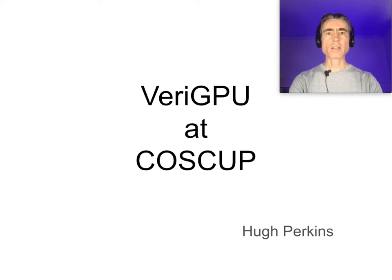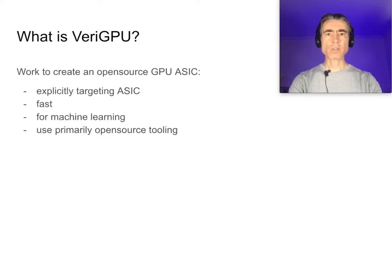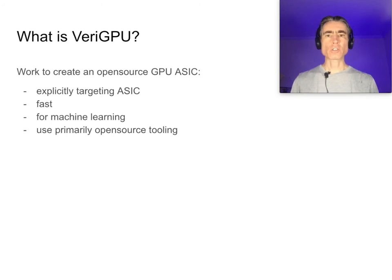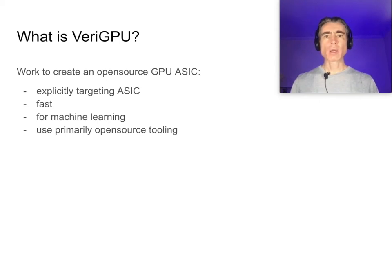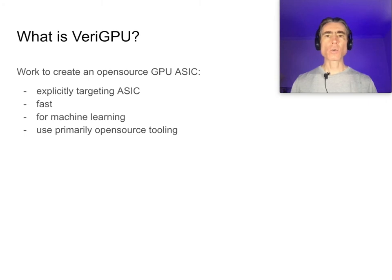I'd like to present VariGPU. VariGPU is work to create an open source GPU ASIC. We're explicitly targeting ASIC, not FPGA. We want it to be fast, it's only for machine learning, and we want to primarily use open source tooling.